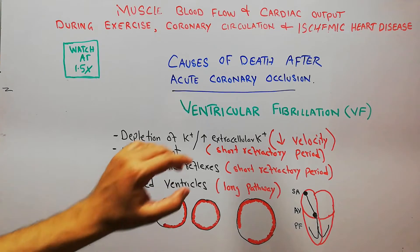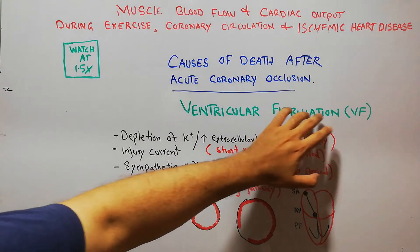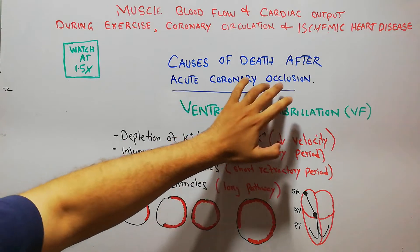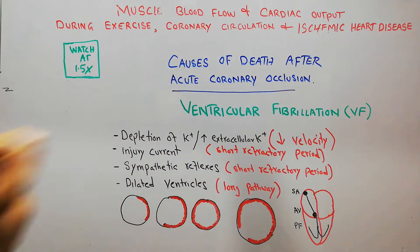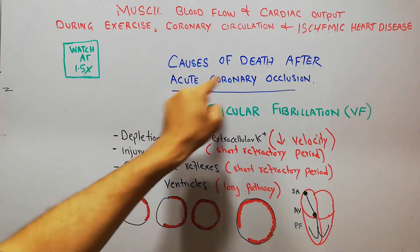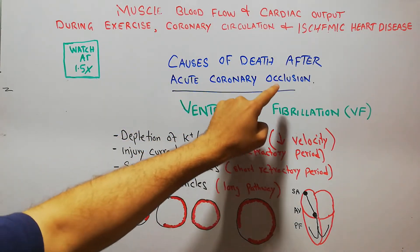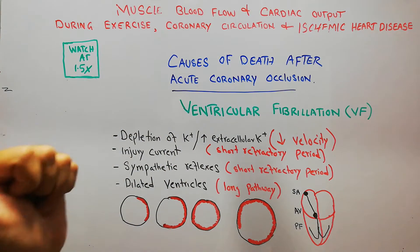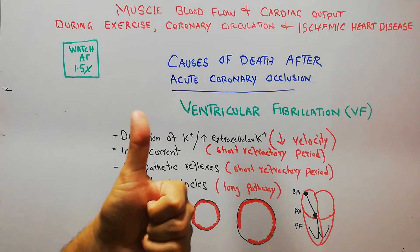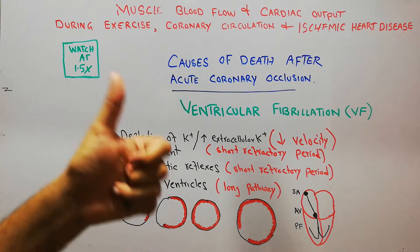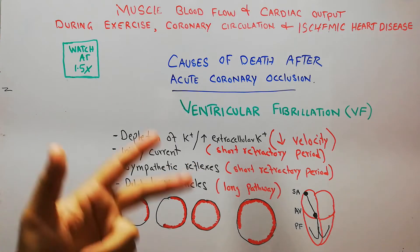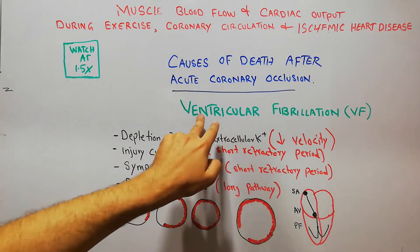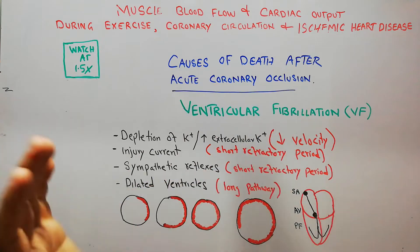Today we are going to discuss ventricular fibrillation, or VF, as a cause of death after acute coronary occlusion. We have started discussing causes of death after acute coronary occlusion, including cardiogenic shock and acute pulmonary edema, and another important cause is ventricular fibrillation.